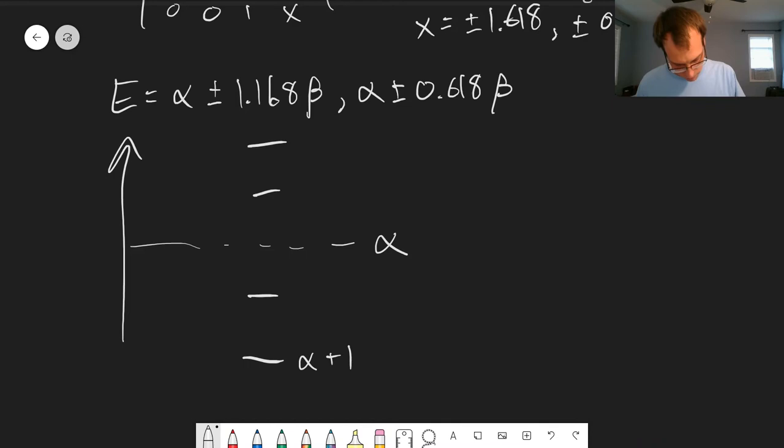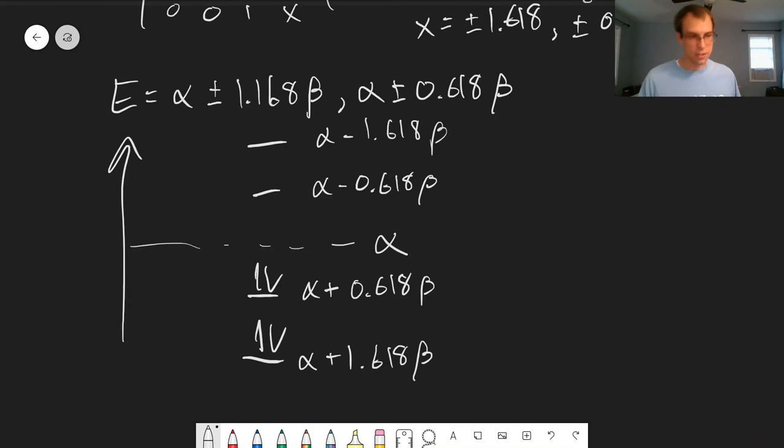We'll have our alpha plus 1.618 beta, alpha plus 0.618 beta, alpha minus 0.618 beta, alpha minus 1.618 beta. And we have four electrons that go in and they go into these lower energy orbitals. So again, we get a stabilization relative to the p orbitals by themselves.